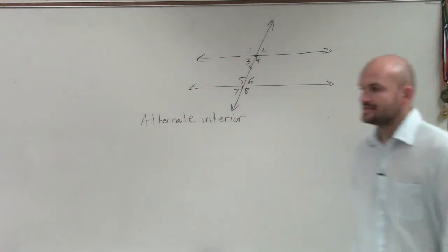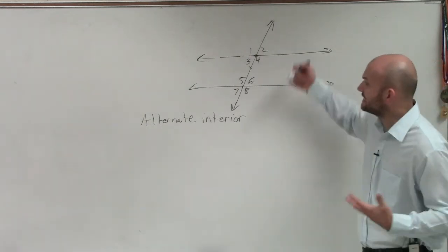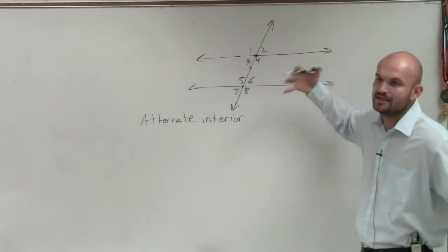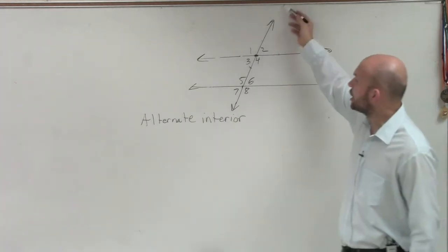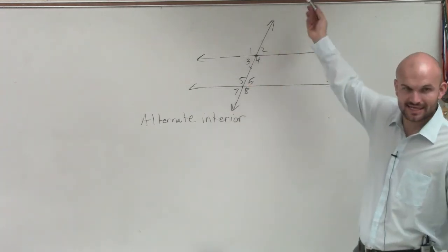What we're going to do for that one is determine the angles that are interior of your two lines. They could be parallel or not parallel, but they're going to be interior of these two lines, and they're going to alternate the line that intersects them.